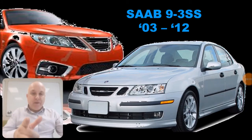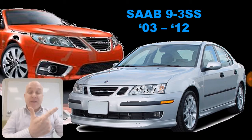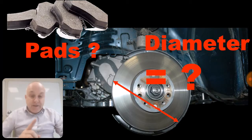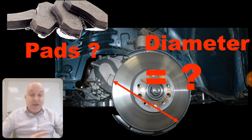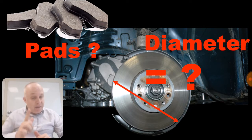Do you own a Saab 93SS from 2003 to 2012? Do you need to know what brake discs or pads are fitted to your car, and what information you need to take with you to your chosen supplier? This is for you. Stay tuned.